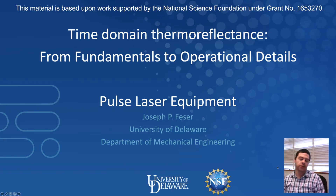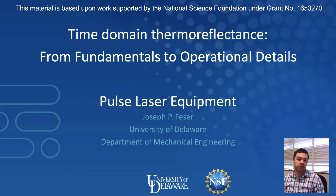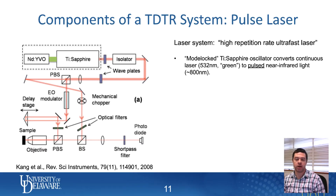Returning to the tutorial on time-domain thermoreflectance, what I'd like to do now is talk specifically about the pulse laser equipment used to produce the laser beams for time-domain thermoreflectance. One of the core components of a time-domain thermoreflectance system is the pulse laser itself. It is by far the most expensive component in the system, so you want to think carefully about what you want here.